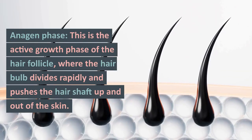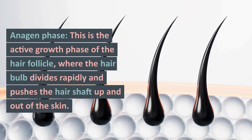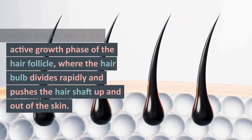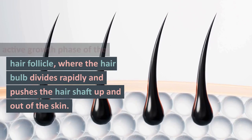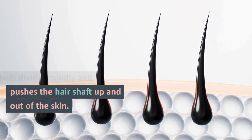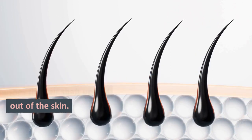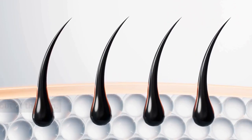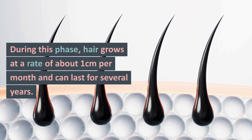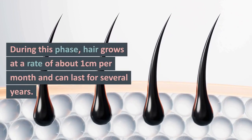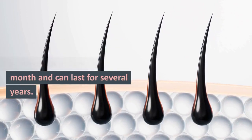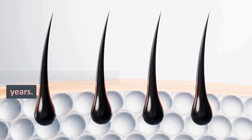Anagen phase. This is the active growth phase of the hair follicle, where the hair bulb divides rapidly and pushes the hair shaft up and out of the skin. During this phase, hair grows at a rate of about 1 cm per month and can last for several years.